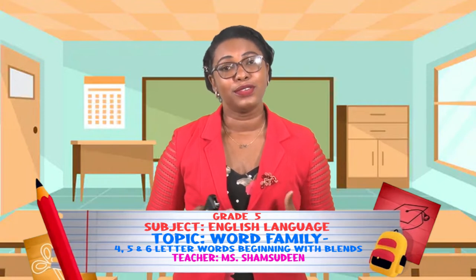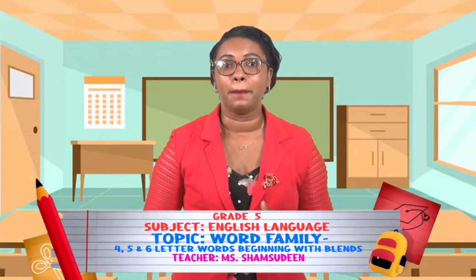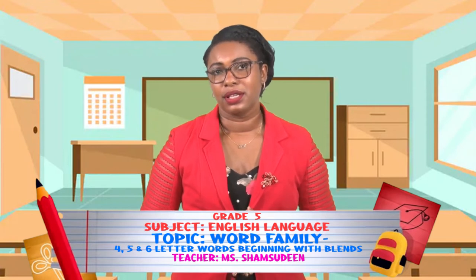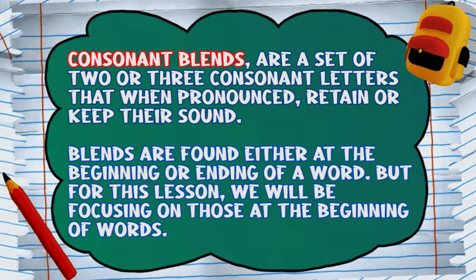So here we go to visit a few word families. How can we describe a word family? Word families are groups of words that have a common pattern or group of letters with the same sound. We're going to be looking at words that are related based on blends with which they begin. Those blends are consonant blends — a set of two or three consonant letters that when pronounced, they retain or keep their sound. Blends can be found at the beginning or at the end of words, but for this lesson, we will be focusing on those at the beginning of words.